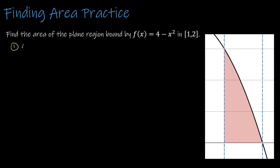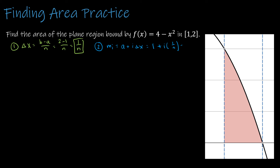Step 1: delta x. Delta x is b minus a over n. In this case, that's 2 minus 1 over n, or 1 over n. Step 2: find the endpoint. I'm always going to use the right one, so that's a plus i times delta x. Here a is 1 — we haven't had one that doesn't start at 0 yet, and that's what's going to make this one a little harder. Plus i times delta x, which is 1 over n. So I have 1 plus i over n.